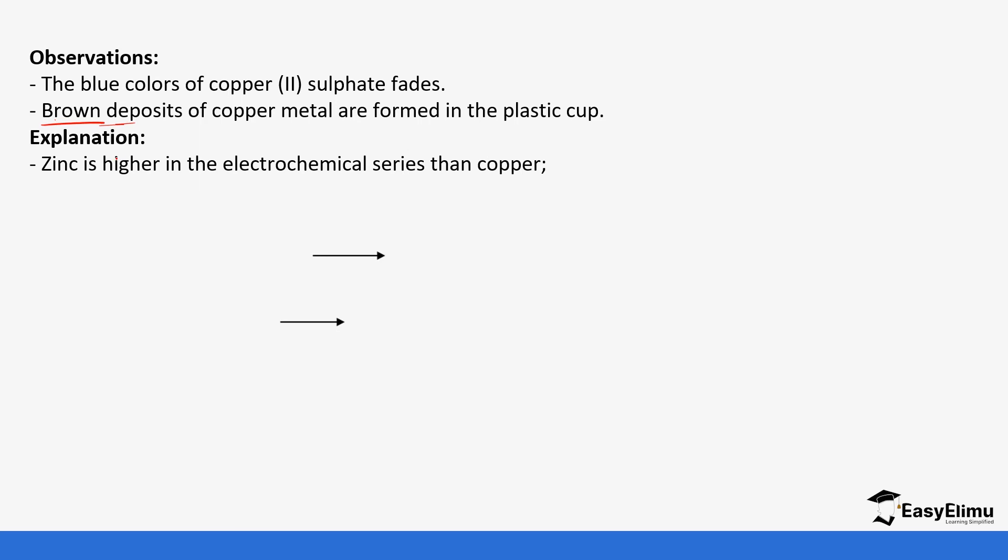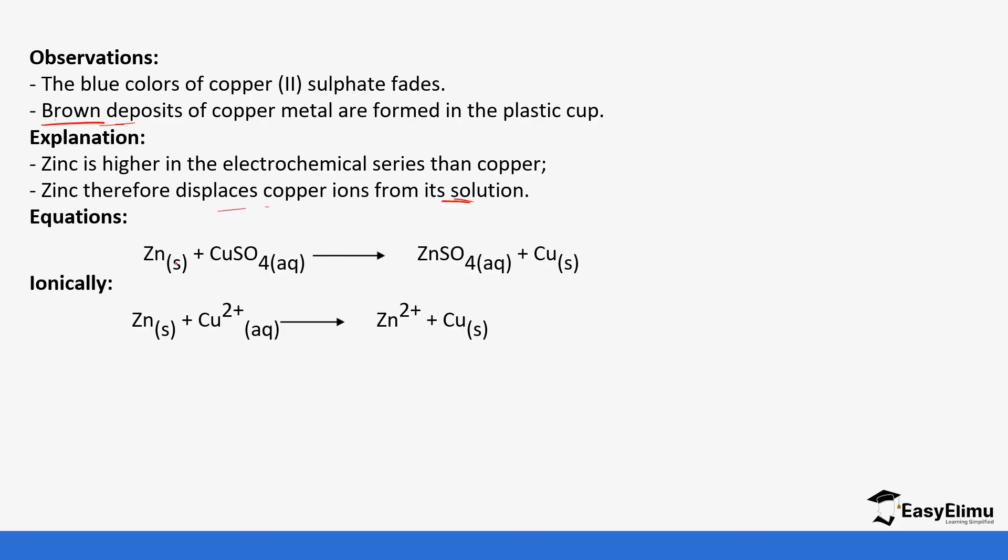What happens is that since zinc is higher in the electrochemical series than copper, it's going to displace copper ion from its solution. So zinc will react with copper sulfate to form zinc sulfate and copper ions. You can see the copper ions are displaced from copper ions to copper solid. So that's where we get the brown deposits. So this is the displacement.